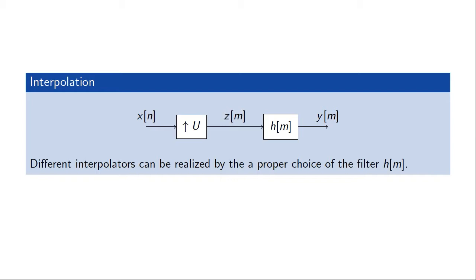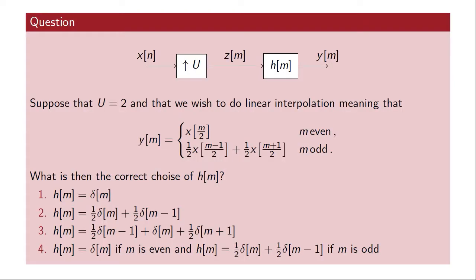Different interpolators can be realized by choosing different filters H(M). We will arrive at a good choice by studying the discrete time Fourier transform of the signals involved, just as we did in the downsampling section. Suppose we want to implement linear interpolation using such a circuit — an upsampler followed by a linear filter. So how should we choose our filter H(M) for an upsampling factor of 2?